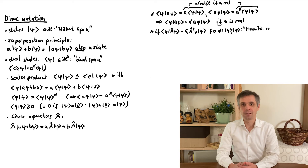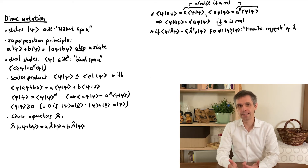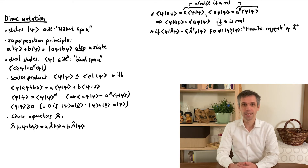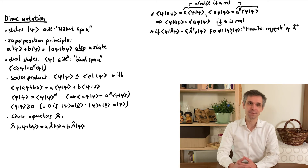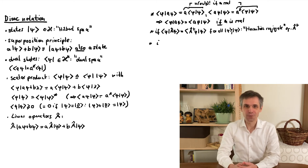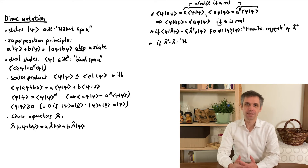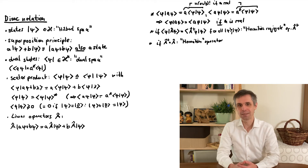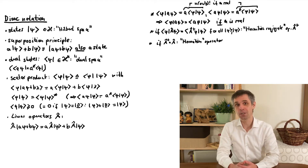If you work this out in an orthonormal basis, where A is just a matrix, then the matrix for A-dagger would be obtained by a transposition and a complex conjugation — hence a Hermitian conjugation. There is a very important class of operators for which A-dagger is the same as A. We call these operators Hermitian, the same notion we apply to matrices. As it happens, x and p and all the Hamiltonians that we encounter in quantum mechanics are examples of Hermitian operators.